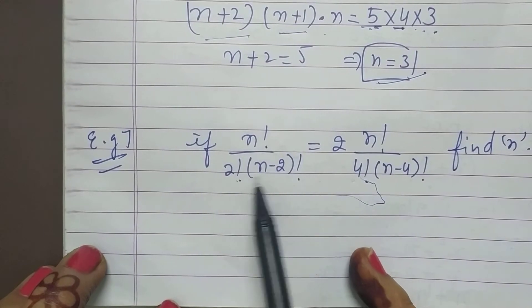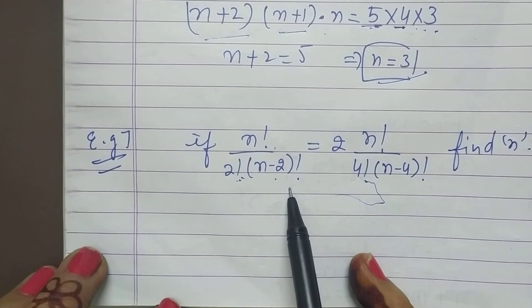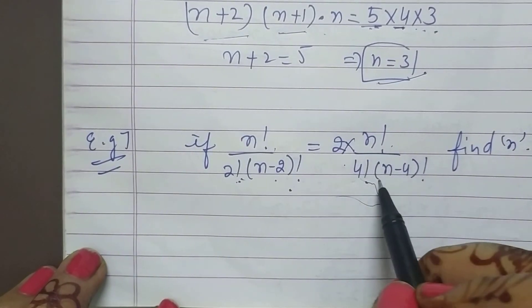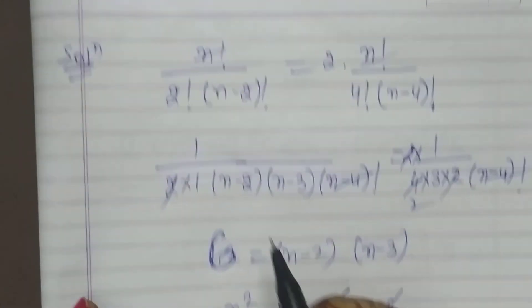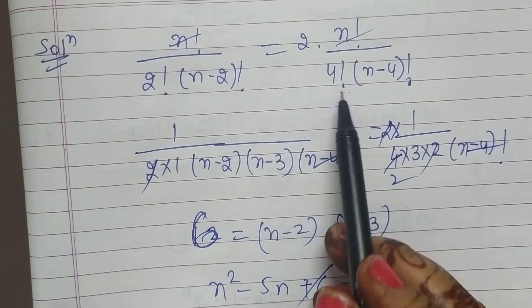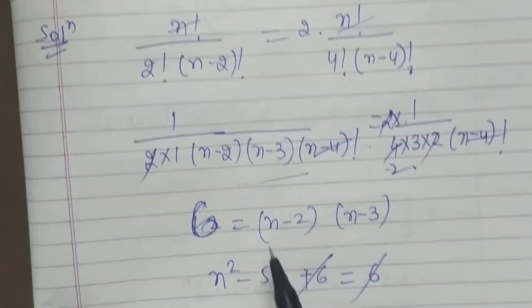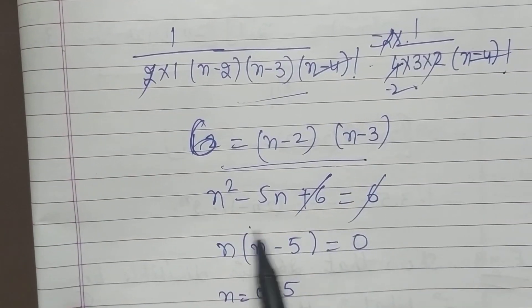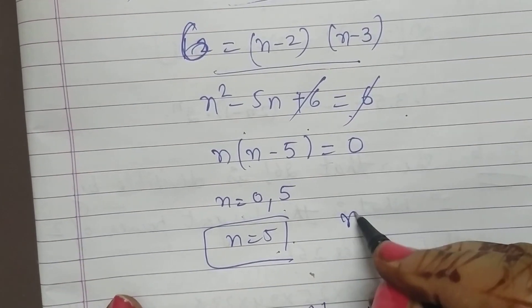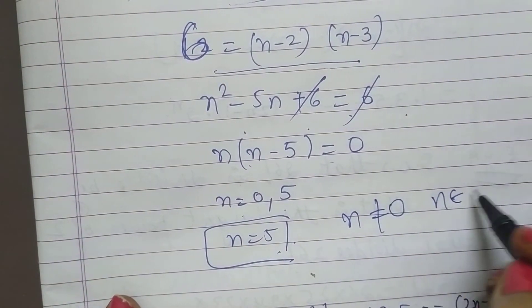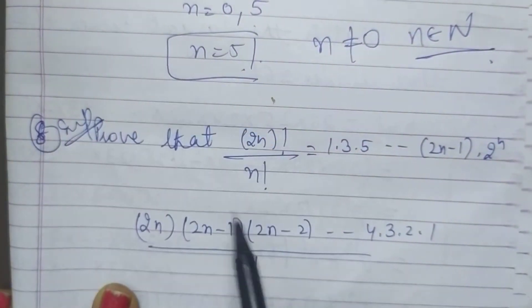If n factorial upon 2 factorial (n-2) factorial is equal to 2 into n factorial upon... First this n factorial cancels. Then what I did, 2 factorial, I cancelled 2 factorial. And after that I got this thing. Simplified everything. So what I got: n square equals 6, 6 also cancelled. I got 2 values: 0 and 2. Then after that, n is not equal to 0 because n belongs to natural numbers. This is a very important question.